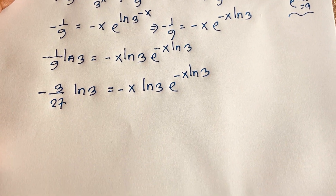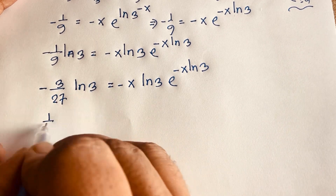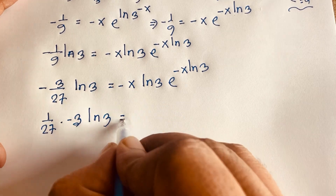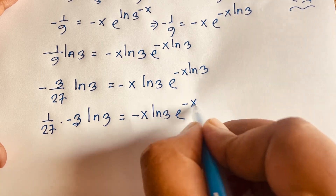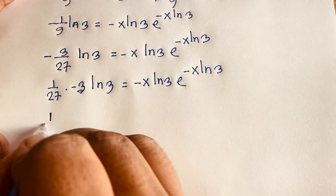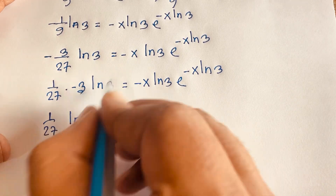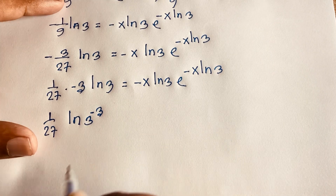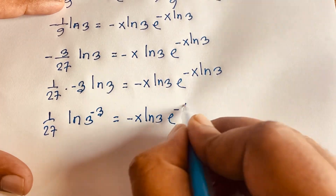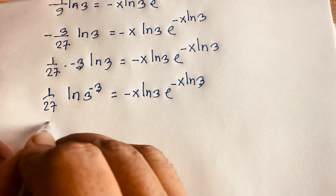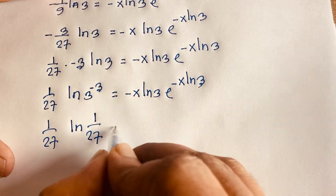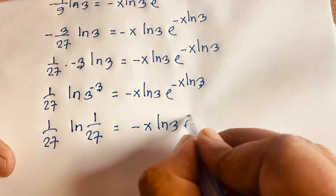Now the equation becomes: 1 over 27 times ln 3 equals minus x ln 3 times e to the power minus x ln 3. Since 3 to the power minus 3 equals 1 over 27, I can write the left side as ln of 3 to the power minus 3, with the exponent moving in front. So we get minus 3 ln 3 times e to the power minus x ln 3 on the left side.